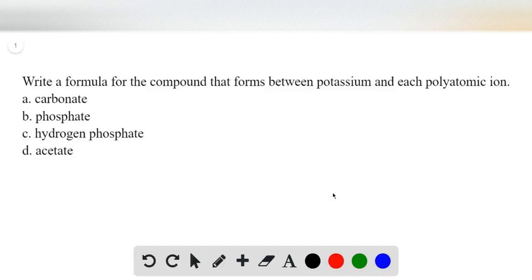To write the formula of a compound that forms between a cation and a polyatomic ion, we have to know the charge of that polyatomic ion. In this case, we have carbonate, phosphate, hydrogen phosphate, and acetate. There's tables in the book, and these you have to know.